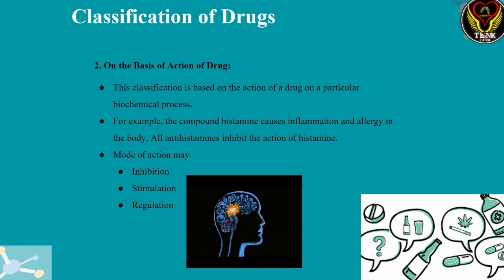The drug acts on the cell body — this is how we classify by action. For example, in an allergy response, we use antihistamines. Histamine is the allergy signaling molecule. Antihistamines work by inhibiting histamine — blocking the histamine signal to stop the allergic response.